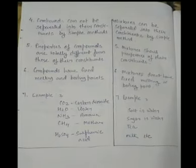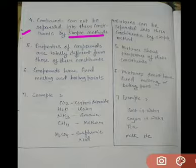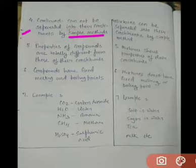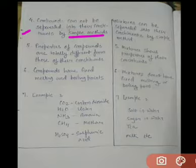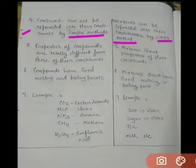Now, talking about compounds: compounds cannot be separated into their constituents by simple methods. For example, if we want to separate carbon dioxide or the components of water through filtration, we cannot separate them — we will again get only water. But talking about mixtures, they can be separated into their constituents by simple methods. Suppose we take a sand solution, which is a mixture of sand and water — we can filter it and get the sand particles separated from the water. This is the fourth difference.